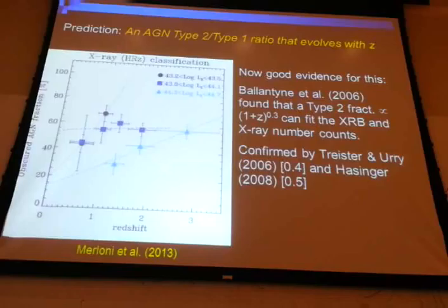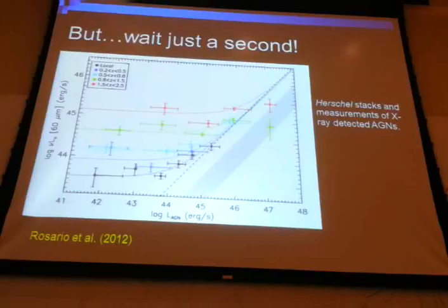One immediate prediction of that hypothesis is that the obscured to unobscured ratio of AGNs, or the type two to type one ratio, would evolve with redshift. We studied the X-ray background and found that indeed the type two fraction could go up as one plus z to the 0.3 and fit the X-ray background number counts. This was confirmed by bigger samples with actually steeper increases. The latest work by Andrea Merloni using Cosmos data also finds that the obscured AGN fraction as a function of redshift shows an increase with redshift. There does seem to be some connection that the unified model is connected somehow to the host galaxy. It knows what time it is in terms of the universe's evolution.